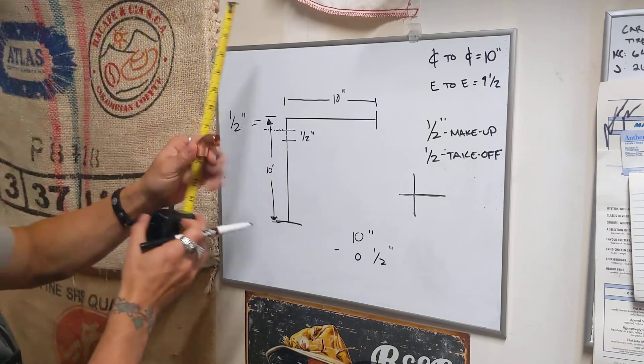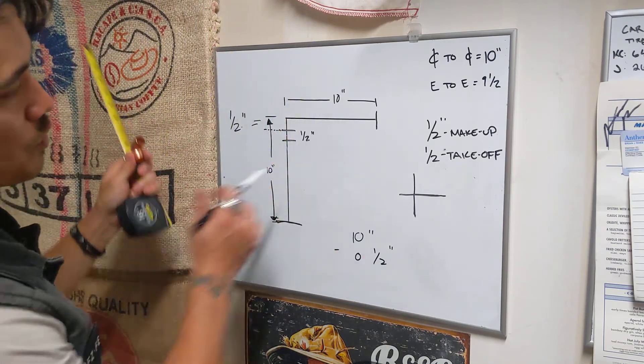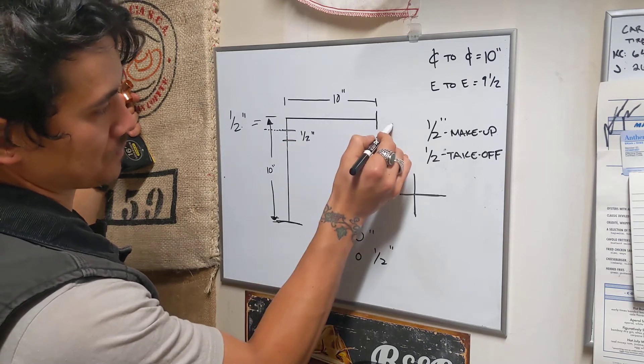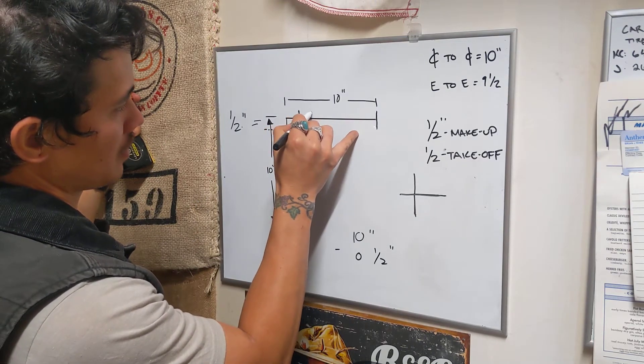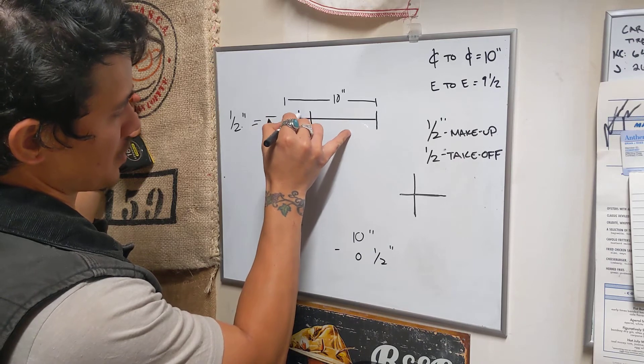Also don't forget that a 90 has two sides so if you have another 10 inch run over to here you're going to have another half inch void space.